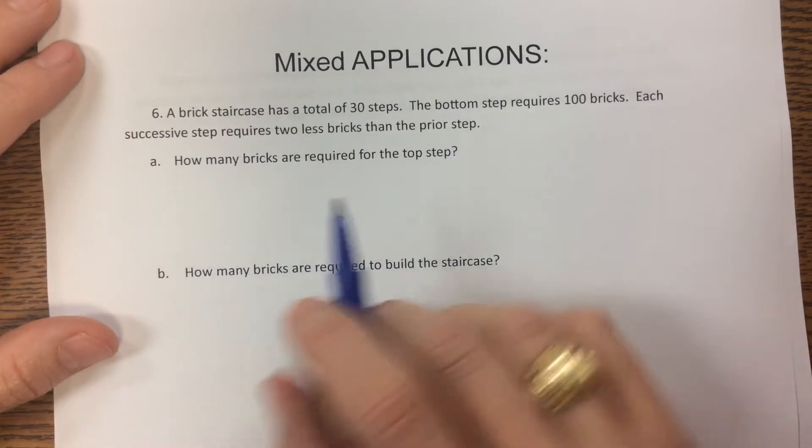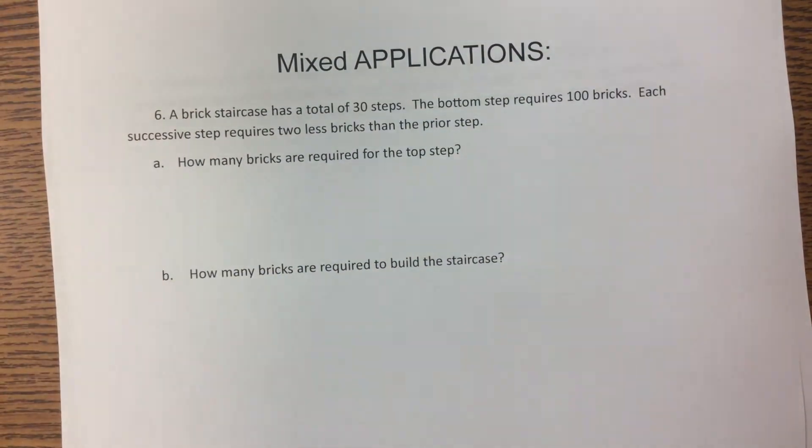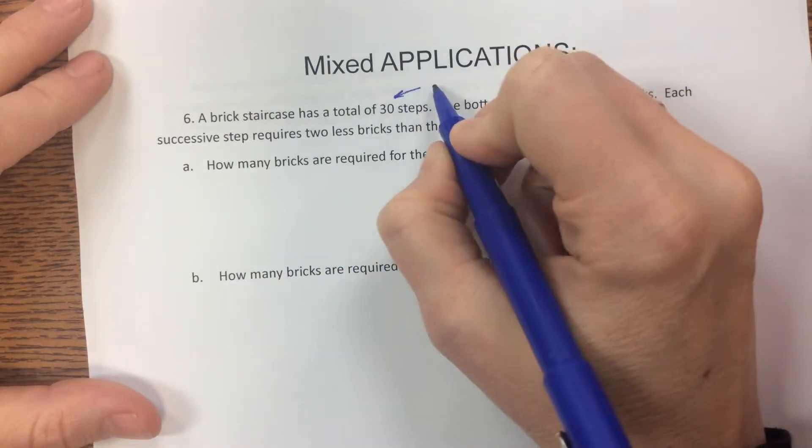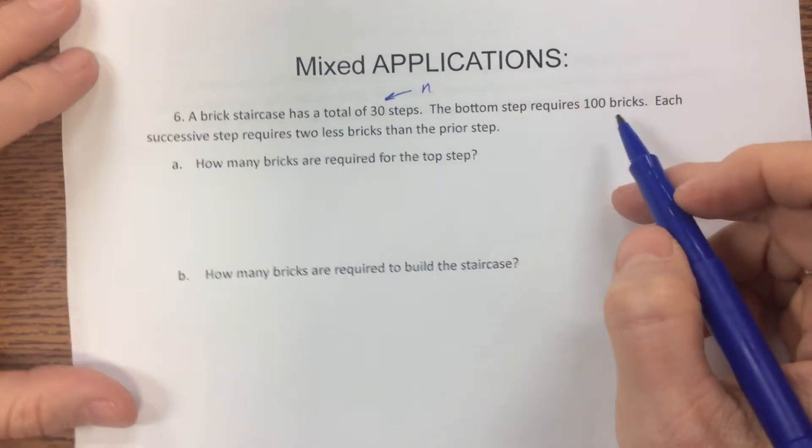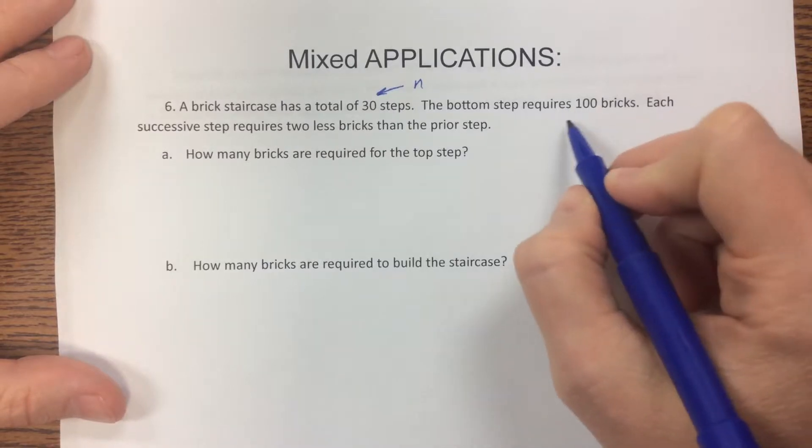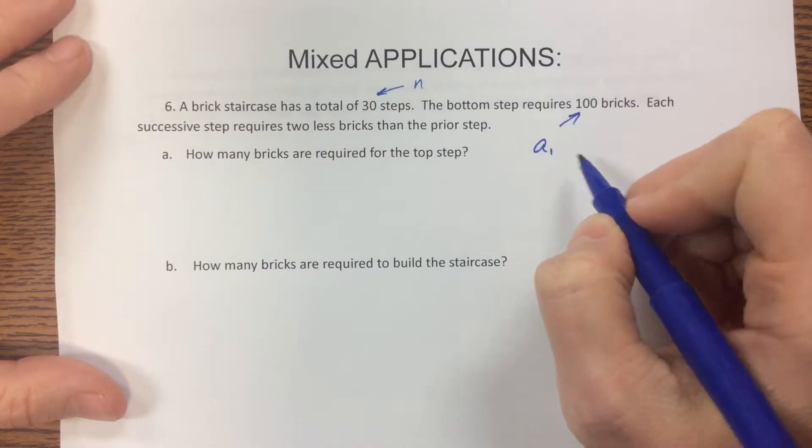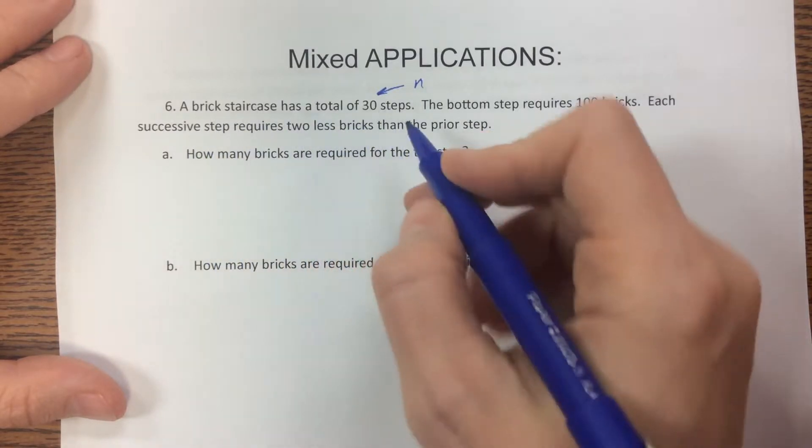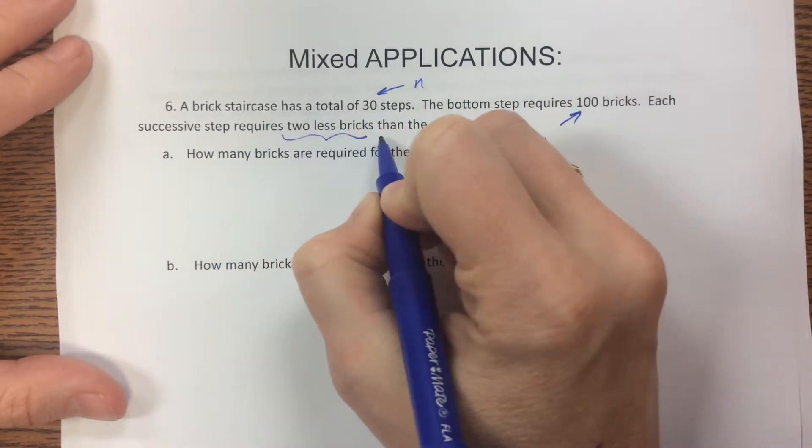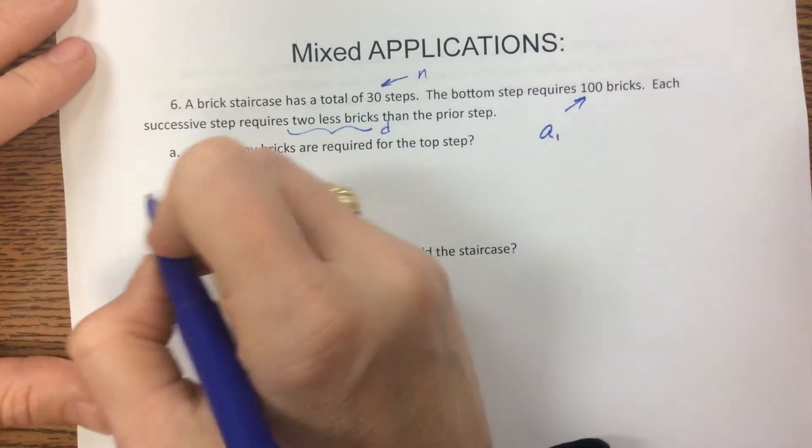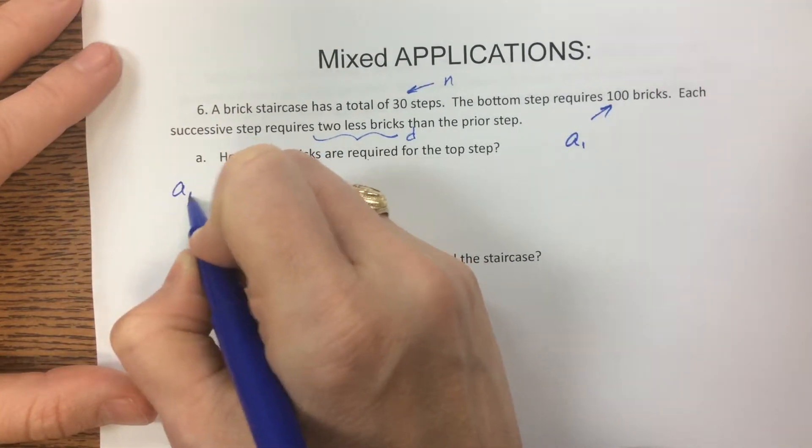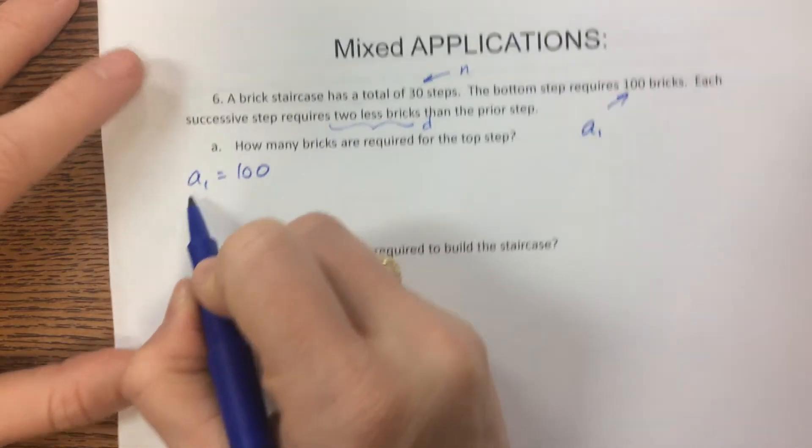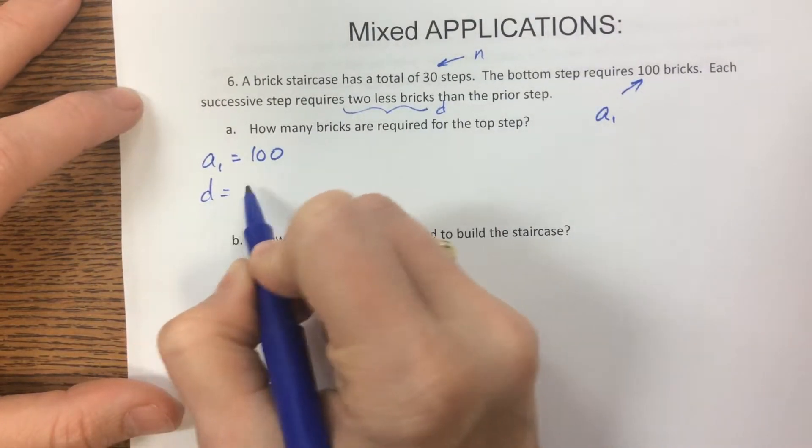So what we notice already is that this 30 steps, that becomes our n value. The bottom step requires, this can be the first term of our sequence. And then each successive step requires 2 less bricks. So 2 less bricks becomes our d value. So we know that a sub 1 is equal to 100. We know that d is equal to negative 2.